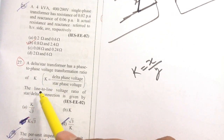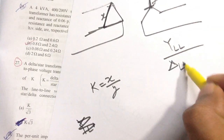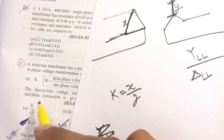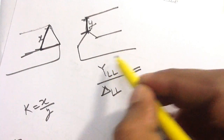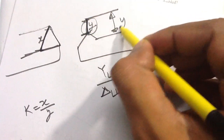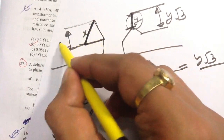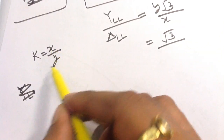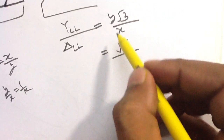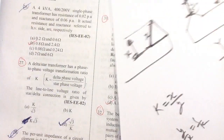Let delta phase voltage be x and star phase voltage be y, so x/y = K. Star line-to-line voltage equals y√3 and delta line-to-line voltage equals x. So the ratio is y√3 / x = √3 × (y/x) = √3 × (1/K) = √3/K. Option D is correct.